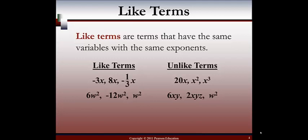Our second example, we have 6xy, 2xyz, and w squared. Do we have the same variables? In the first one, we have x and y. The second one has x, y, and z. The third one has w. So those three examples do not have the same variables, so these are not like terms and we could not combine them.